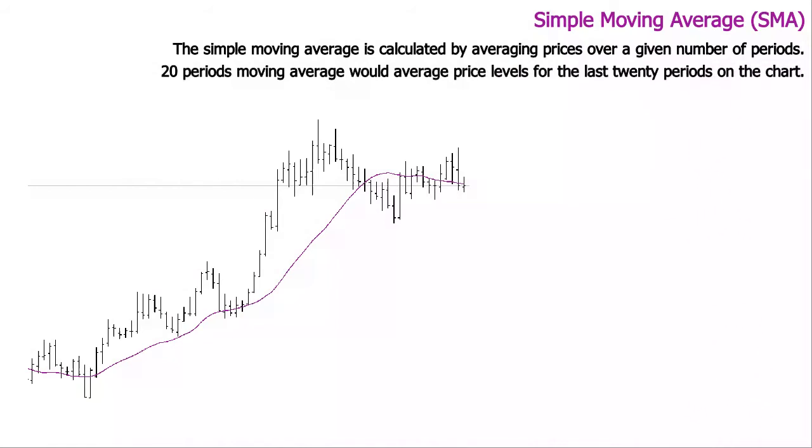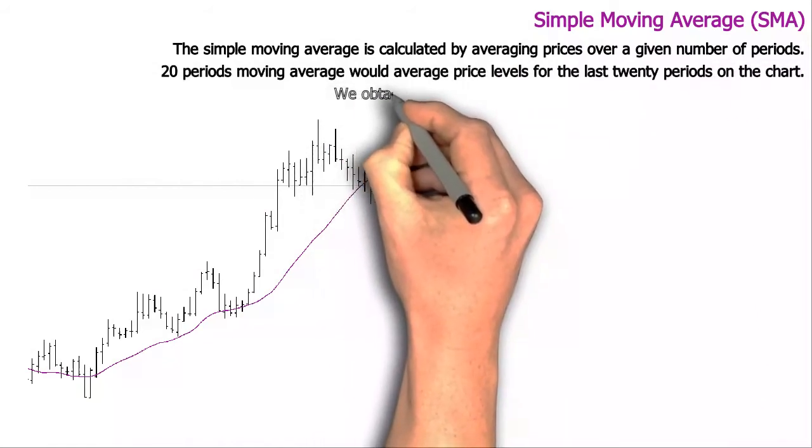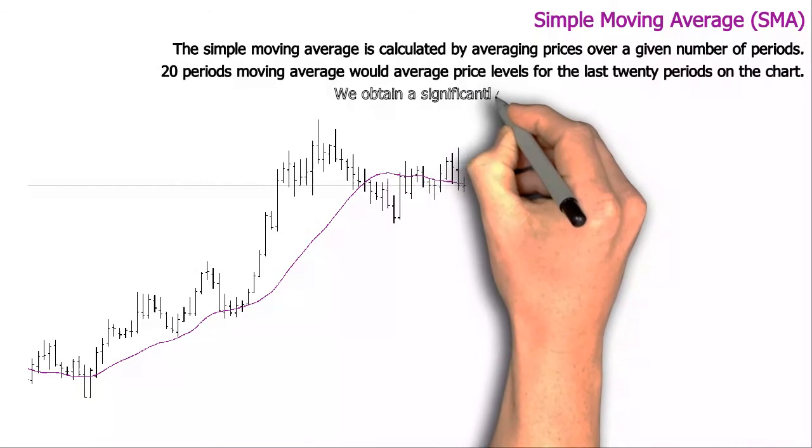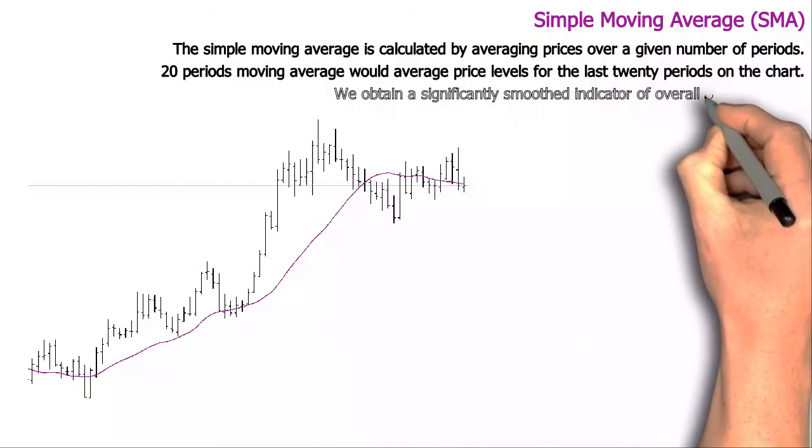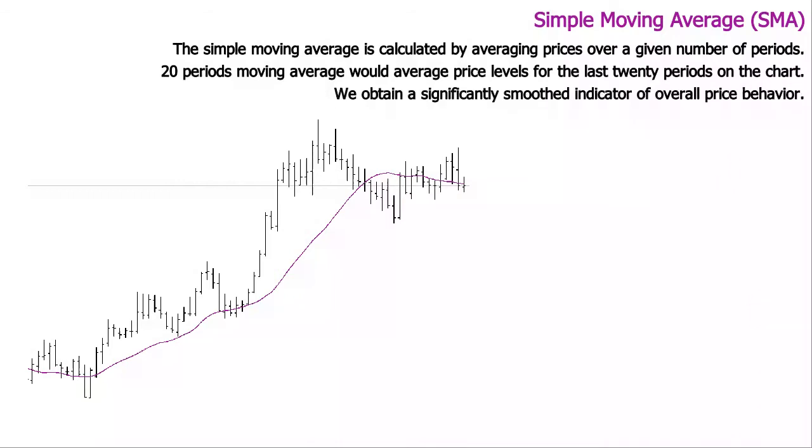The more periods are taken into account when we calculate the Simple Moving Average, the less the Simple Moving Average line will reflect minor fluctuations in market behavior, and the smoother the curve will be.